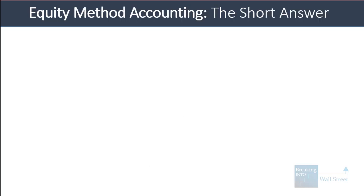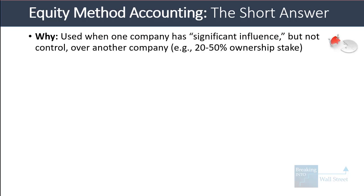I'm going to give you the short answer first along with the very basics you need to know, then we'll go into a more complex demonstration with a full three-statement financial model in Excel. I'll show you what happens with the net income and dividends, and also what happens when a company changes its ownership percentage by acquiring more or less of the other company. This method of accounting is used when one company — the parent company — has significant influence but not control over another company, which we'll call the subsidiary company or subco.